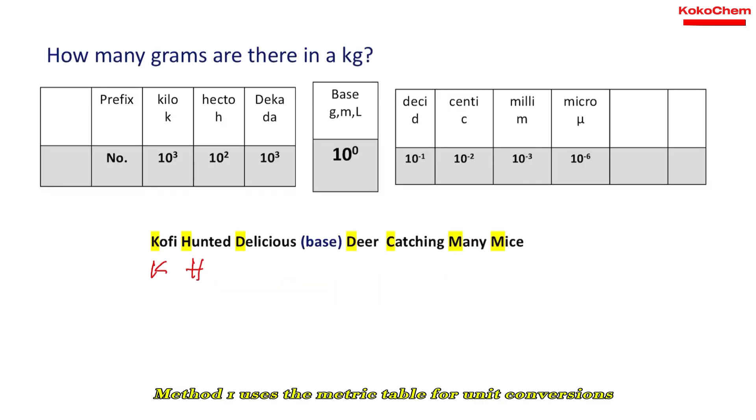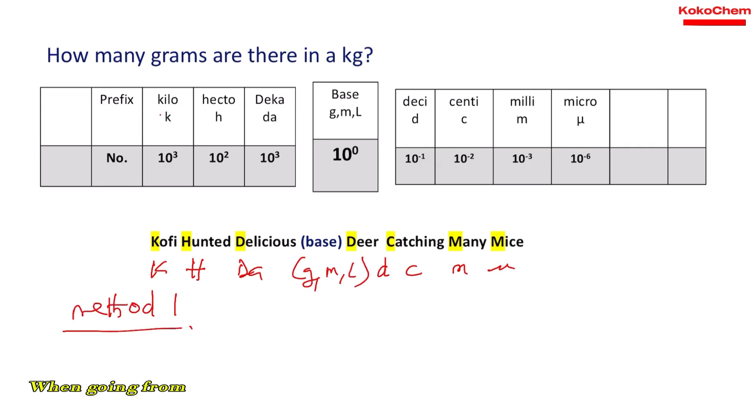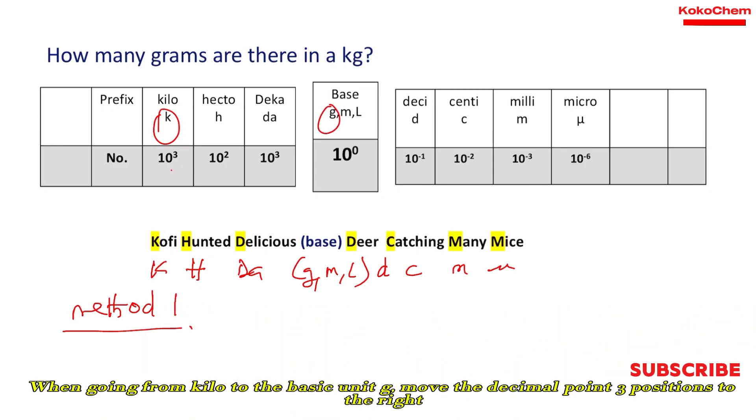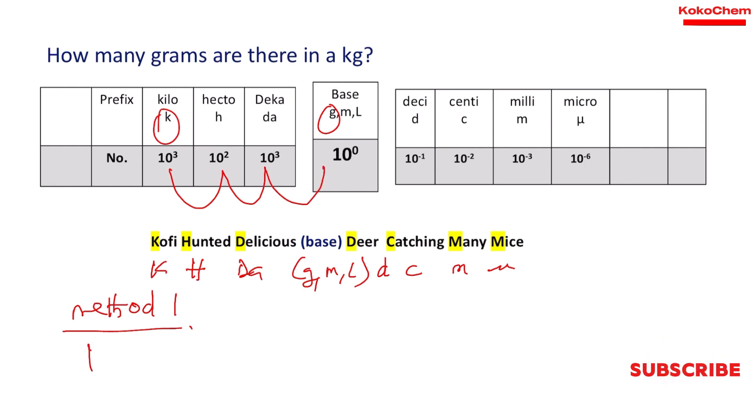Kilo, Hecto, Deka, Desi, Centi, Milli, and Micro. From kilo to grams, how many times to the right? One, two, three. So you take one and the decimal point. You move it one, two, three towards the right side, adding zeroes. So one kilogram equals 1000 grams. That's method one.